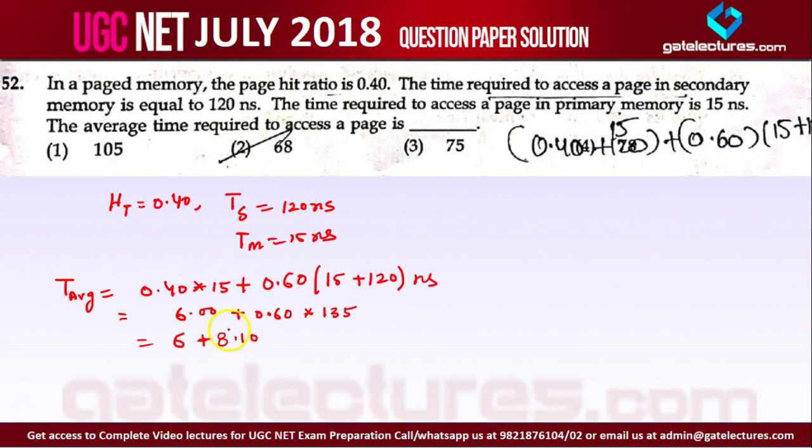So the problem with this question is they have taken this as 60 and this one as 8. That's why they have given the options like this. But most probably this question will be scraped due to the wrong options. Most of the students must have marked this option, but 15 into 0.40 is not 60, it is 6. That's why the answer is coming like this.